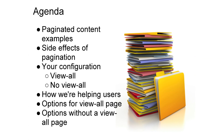For today's agenda, we'll first start with some paginated content examples. Then we'll get into some of the negative side effects of pagination, and why you as a webmaster might want to make some effort so as not to dilute your indexing properties and to show better results to users. Then we'll cover your configuration, and this comes in two parts: for those of you with paginated content and a view-all page available, and for those without. Then we'll talk about what Google is doing to help users and webmasters with paginated content, and last, we'll look at the options you have for your paginated content.